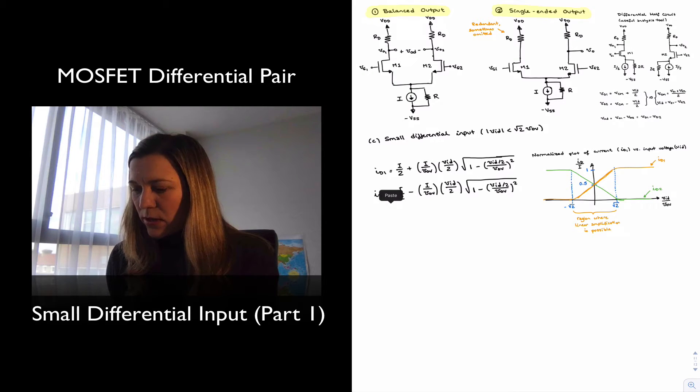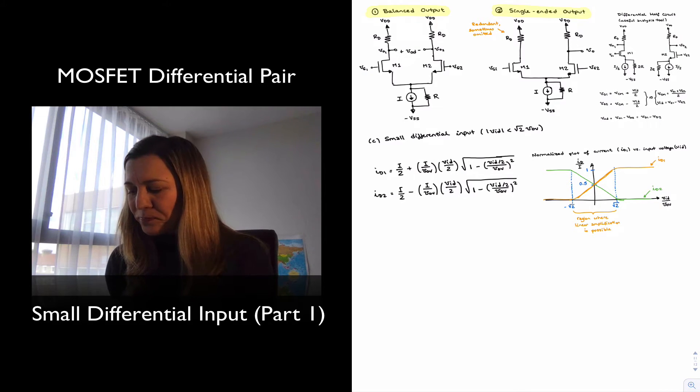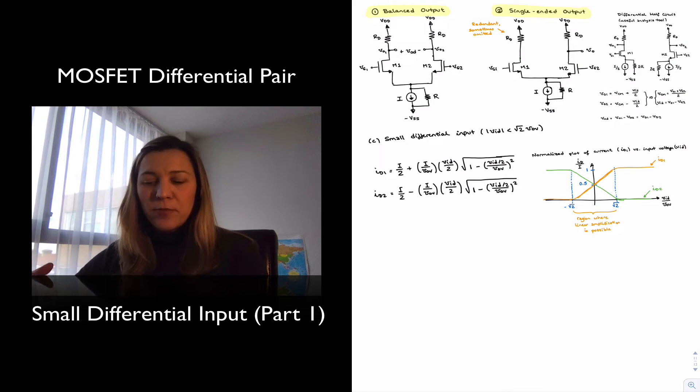Here I have again the expressions for the current ID1 and ID2 that we didn't derive, but we had presented in the previous video. Notice that typically when we are talking about differential input signals, we don't like to be close to the edges of those plots because you can see that ID1 and ID2, they are not linear functions of VAD. There's that square term, VAD is square inside square roots.